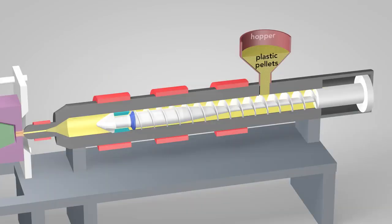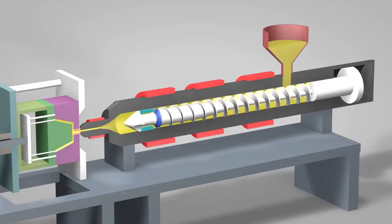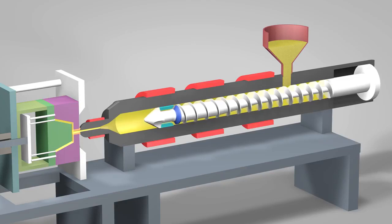Plastic pellets in the hopper feed into the barrel of the injection unit. Inside the barrel, a screw transports the pellets forward. Heater bands wrapped around the barrel warm up the plastic pellets. As the pellets are moved forward by the screw, they gradually melt and are entirely molten by the time they reach the front of the barrel.